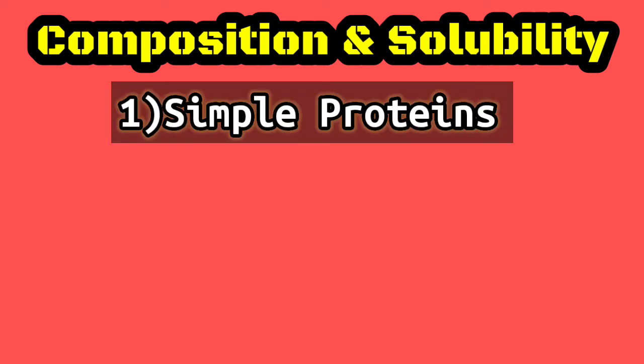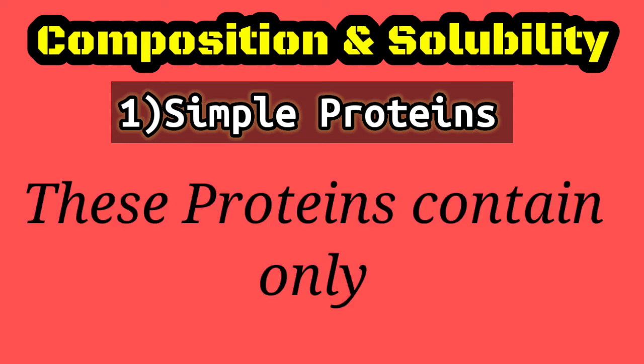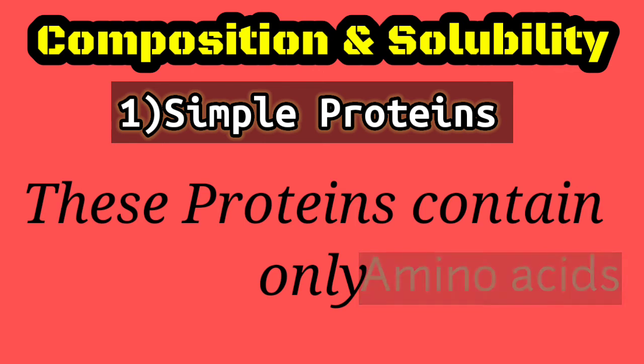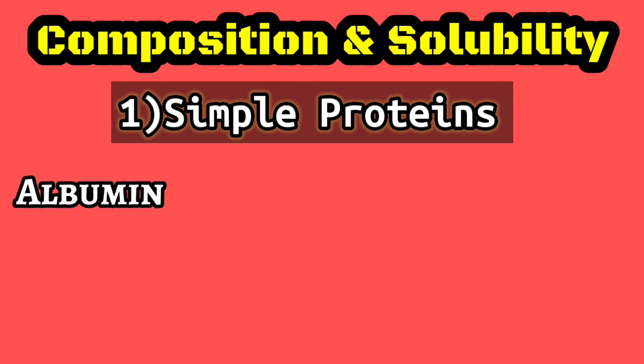Simple proteins are named as such because they contain only amino acids — there is no other chemical group in them. For example, albumin is a simple protein containing only amino acids. Albumin contains around 585 amino acids, is soluble in water, coagulated by heat, and its molecular weight is 69,000.